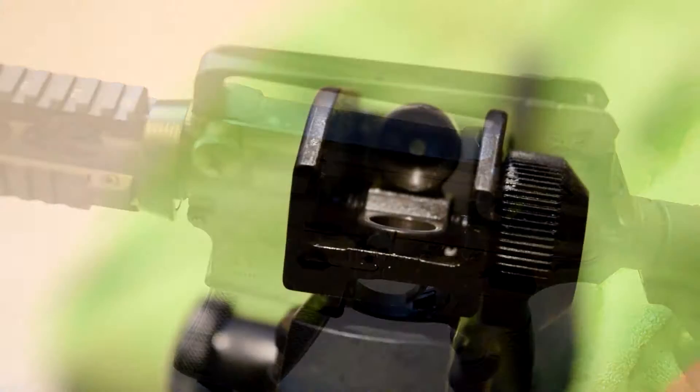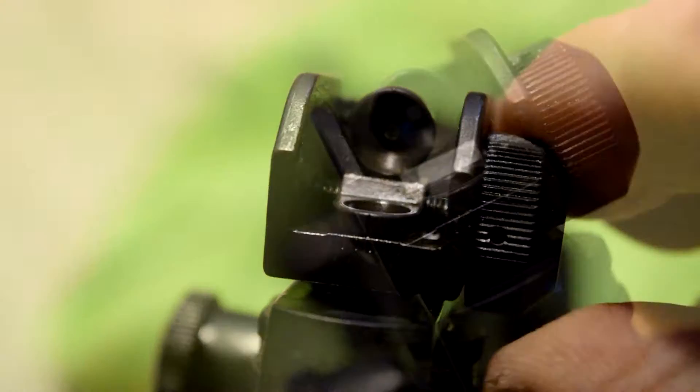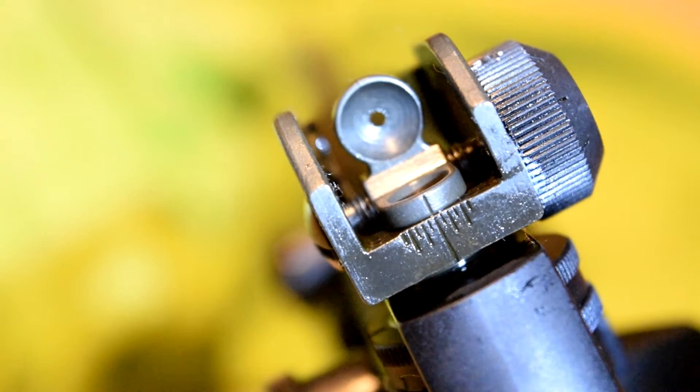You can do this for the windage by turning the thumb screw on the side. If you look close at the bottom there is a little mark you can see that tells you when you get right in the center. There you can see it better. It is right in the center now. It's really a well protected rugged little sight.